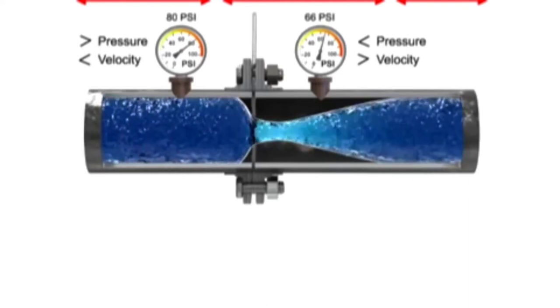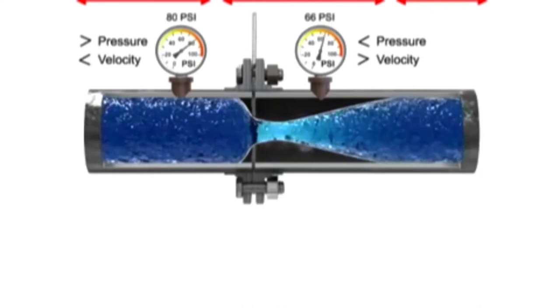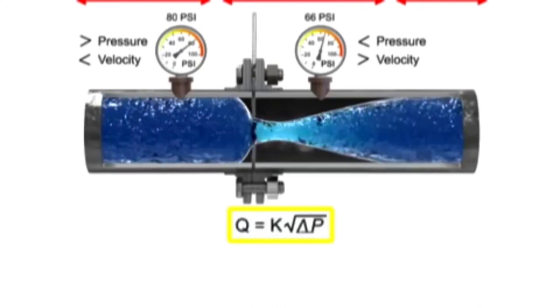With a known differential pressure and velocity of the fluid, the volumetric flow rate can be determined.